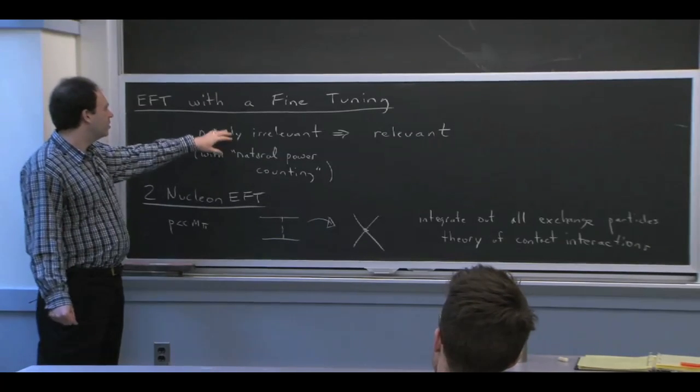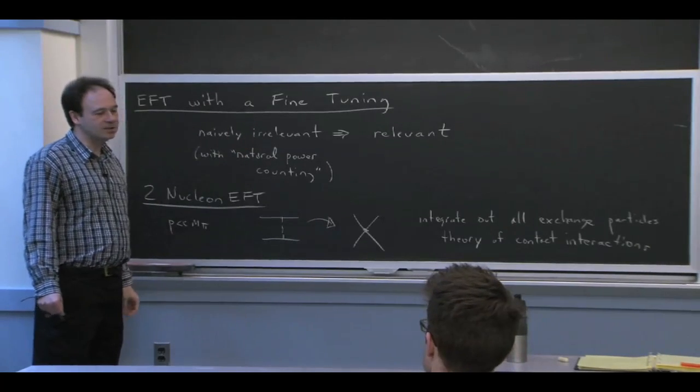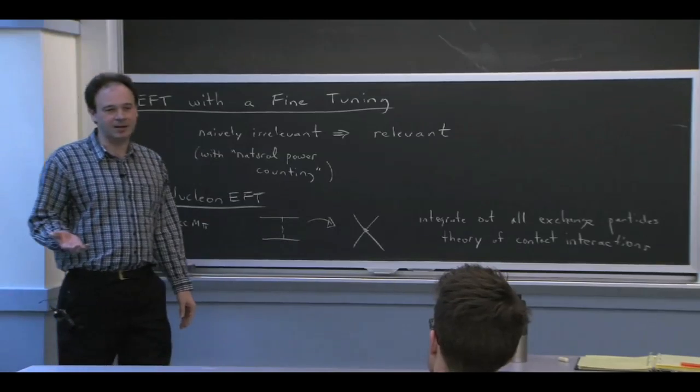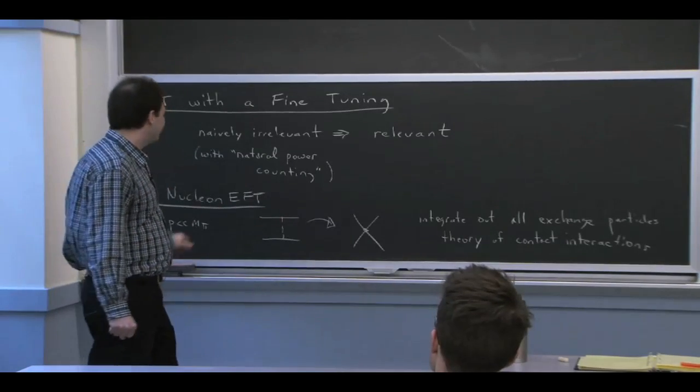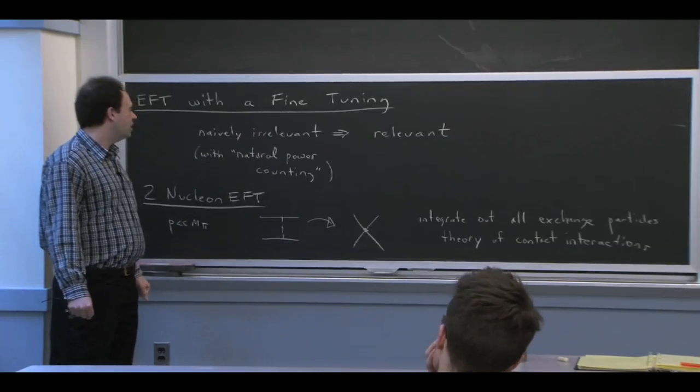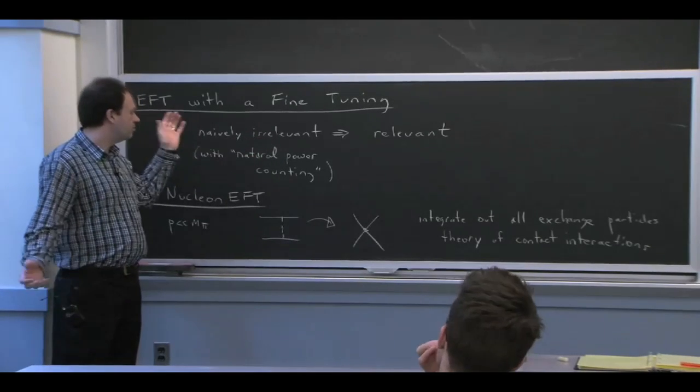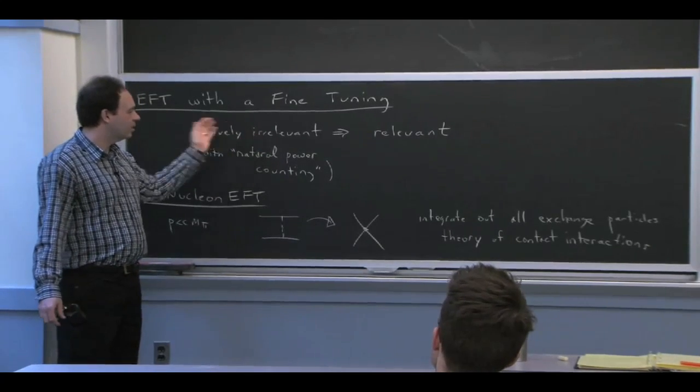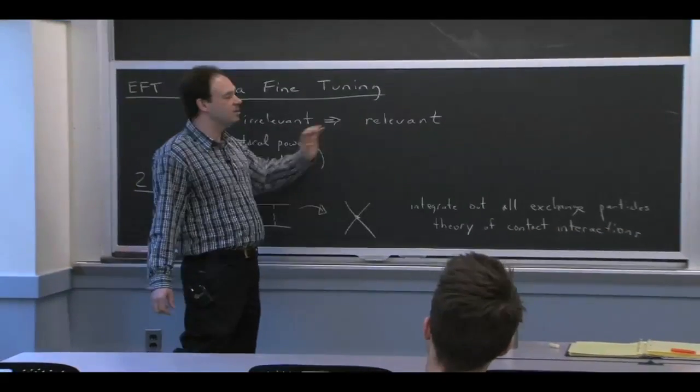So in this example that I'll give, what irrelevant will mean is that you basically do a dimensional power counting, which is how we usually think of defining irrelevant and relevant. Do a dimensional power counting, and you end up finding an operator that you find that the operator looks irrelevant, but when you do calculations, you can see that it should be relevant.